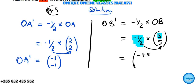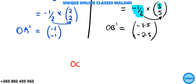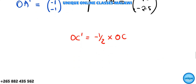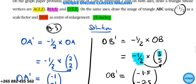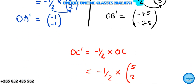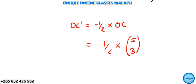Negative half times 5 gives negative 2.5. So the coordinate of the image of B is (-1.5, -2.5). For point C, OC' equals negative 0.5 times OC, which is negative 0.5 times (5, 3). That gives negative 2.5 and negative 1.5. So the image of C is (-2.5, -1.5).